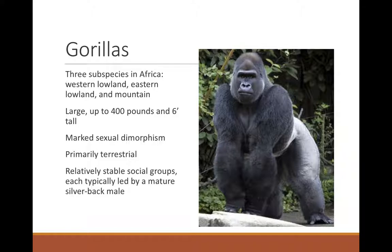Gorillas have relatively stable social groups or harems, each typically led by a mature silverback male. In recent years, we've noted that males will team up as bachelor groups when no breeding territories are available. We can also have two to three adult males leading a group — oftentimes a father and son will co-lead a harem.